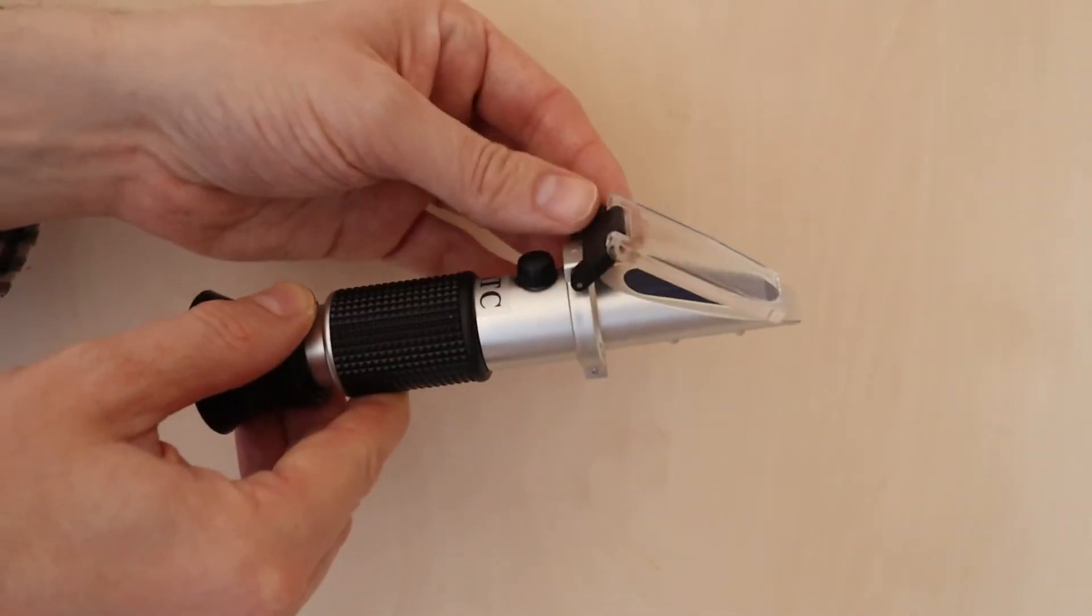To configure the refractometer, open the plastic cover, put a few drops of distilled water onto the surface below with a pipette, then close the cover.